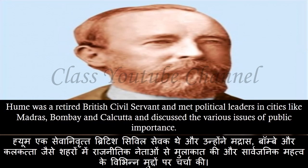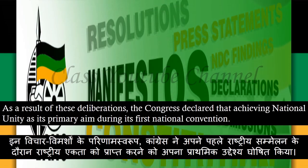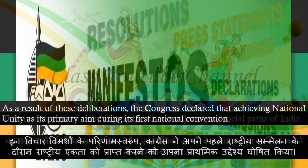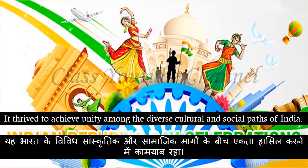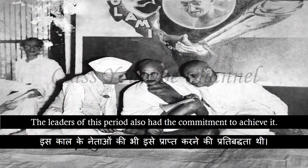WC Banerjee, a retired British civil servant, met political leaders in cities like Madras, Bombay, and Calcutta and discussed various issues of public importance. As a result of these deliberations, the Congress declared achieving national unity as its primary aim during its first national convention, striving to achieve unity among the diverse cultural and social parts of India. The leaders of this period also had the commitment to achieve it.